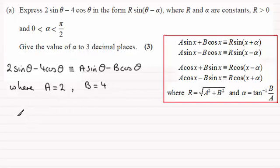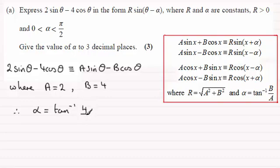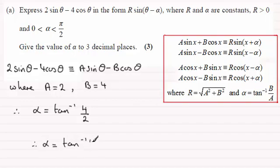That means α is equal to the inverse tan of b over a, which is 4 over 2 — so in other words, α equals the inverse tan of 2.